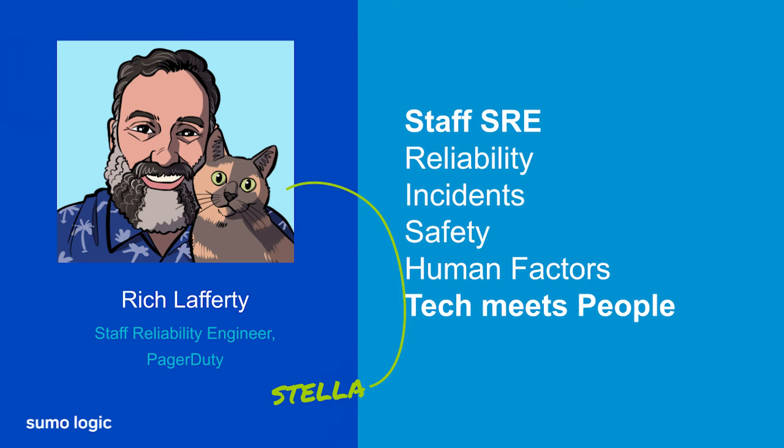But first, let me introduce myself. I'm a staff reliability engineer at PagerDuty, based in Dartmouth, Nova Scotia. Mostly I work on human factors, reliability, and safety — basically the points at which the technical parts of our complex systems meet the people parts. My background is infrastructure engineering and I still do some of that, but most of my time these days is spent working on socio-technical systems.